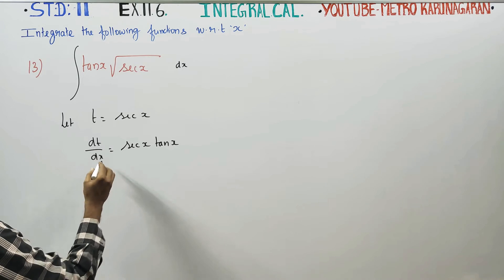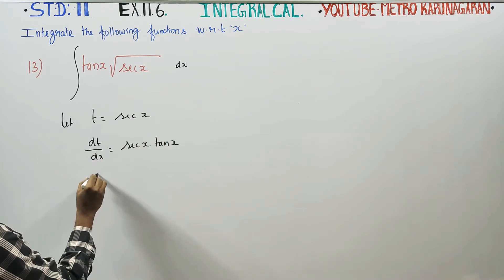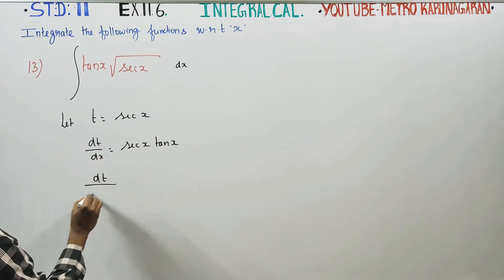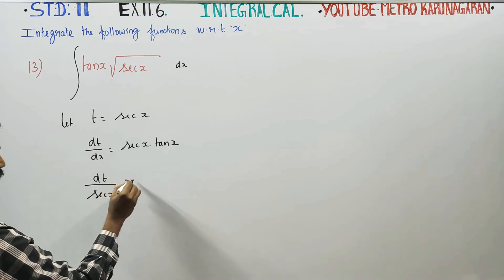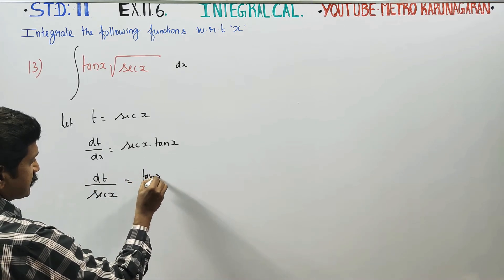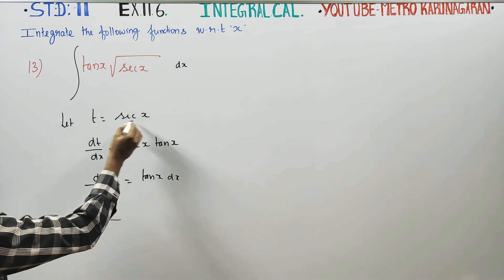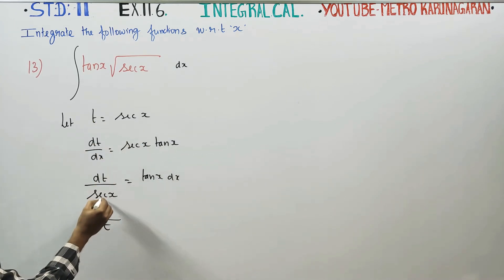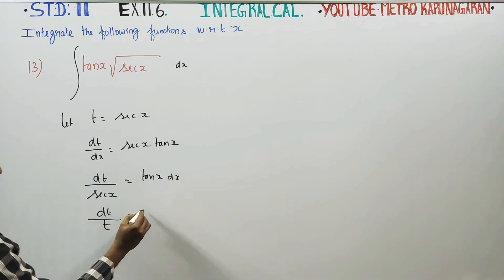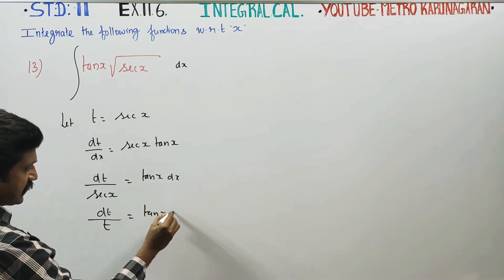Now I'm going to cross the dx. dt by secant x is equal to tan x dx. dt by secant x, secant x is t, so dt by t is equal to tan x dx.